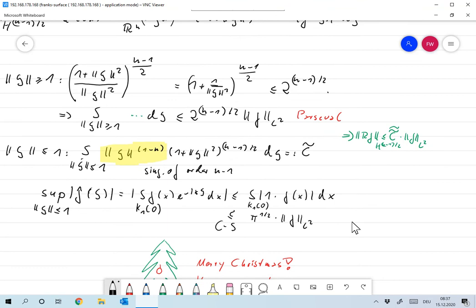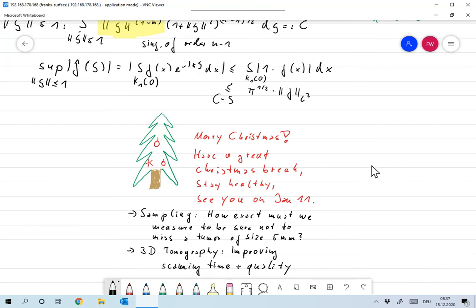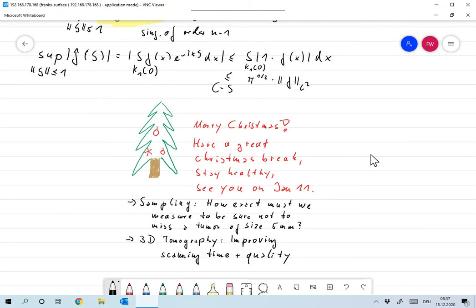Okay, so the very nice result is that computerized tomography gives us a problem that's really very, in a way, very simple to invert. We have a lot of inversion algorithms, and next we'll look at how can that be implemented. So we'll, in particular, answer the question: assume that we want to be sure that we are not missing a tumor of size, let's say five millimeter, then how exact do we have to measure? How must the computer tomography device be constructed? That's a very important question. And in fact, we will be able to answer that using Shannon's sampling theory.